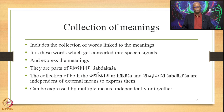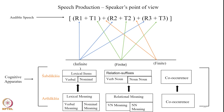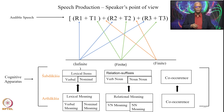When we say Atma buddhya samitya arthaan — collection of meanings — what we mean is that this collection of meanings includes the collection of words linked to the meanings. It is these words which get converted into speech signals and express the meanings. The collection of both the Artha Kasha and Shabdakasha are independent of external means which express them, and therefore Artha Kasha and Shabdakasha can be expressed by multiple means independently or together. This is a diagrammatic view of the process of speech production — from the speaker's point of view, the arrows go from cognitive to audible speech.